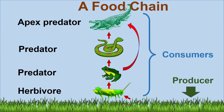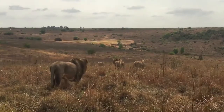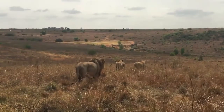A food chain shows what animals eat and if they are eaten by other animals. In this food chain, grass is at the bottom because it is the food producer. The grass is eaten by a grasshopper, that grasshopper is eaten by a frog, the frog is eaten by a snake, and the snake is eaten by an alligator. The animal at the top of a food chain is called the apex predator — the predator that is not eaten by other animals. In the swamps of Florida, the alligator is the apex predator. On the plains of Africa, the lions are the apex predators.